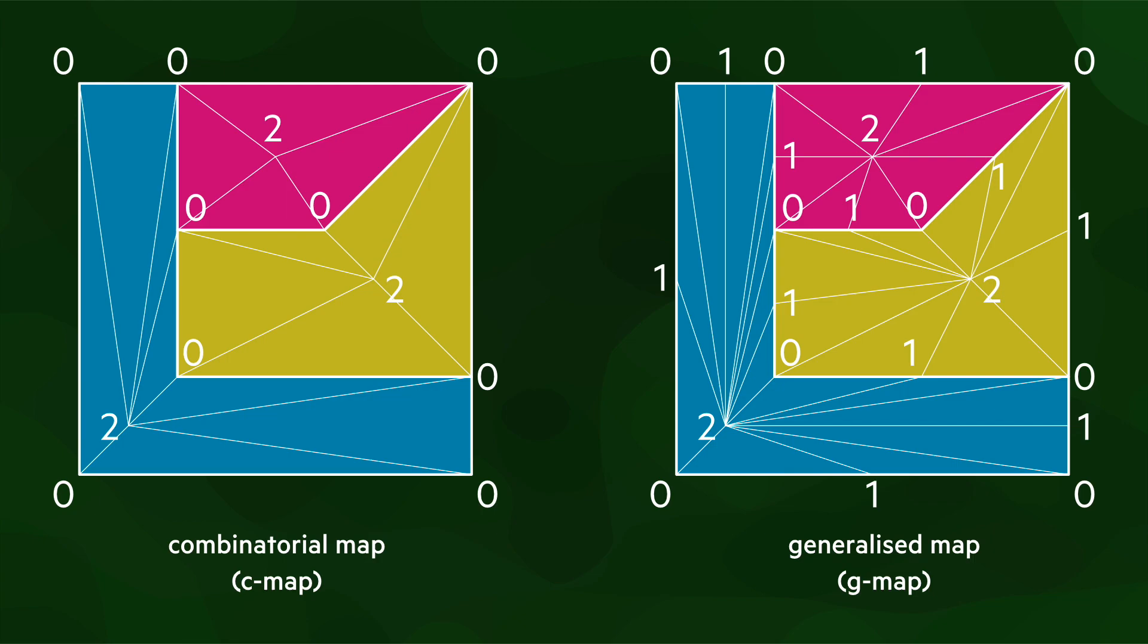As you can see here, this means that there are exactly two generalized map darts for every combinatorial map dart. And every dart in the generalized map has a vertex marked with 0, a vertex marked with 1, and a vertex marked with 2.